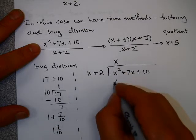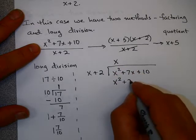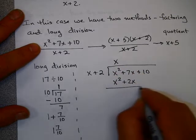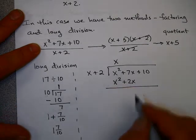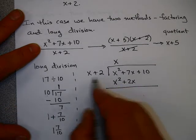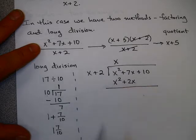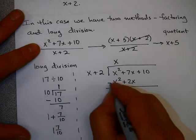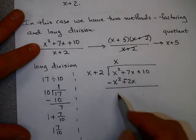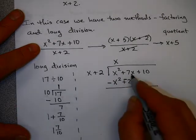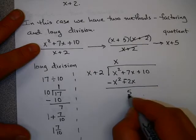x times x is x squared, and x times 2 is 2x. Now, we'd like to subtract. Sometimes people use the term, instead of subtraction, since this has multiple terms, to change the signs and add. So x squared minus x squared is 0. 7x minus 2x is 5x.